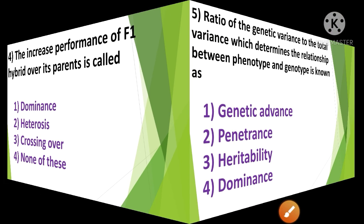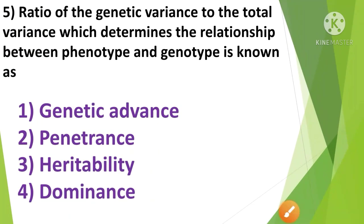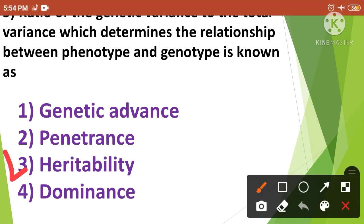Next question: Ratio of the genetic variance to the total variance, which determines the relationship between phenotype and genotype, is known as — 1st option genetic advance, 2nd option penetrance, 3rd option heritability, and 4th option dominance. The correct answer is option 3rd, heritability.